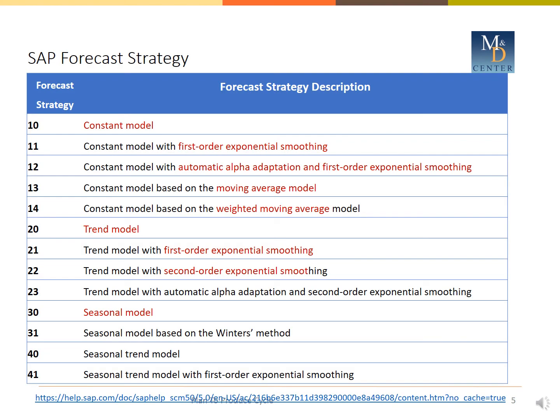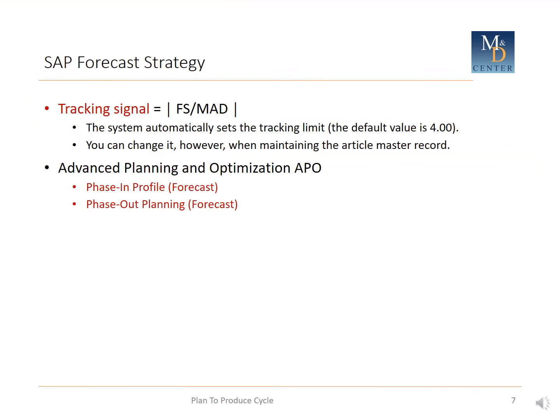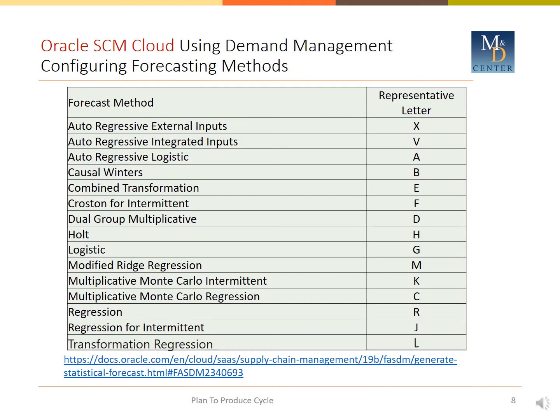In SAP, we find different forecasting strategies: constant model, trend model, seasonal model, trend-seasonal model, and automatic model selection. SAP also provides tracking signal and APO phase-out and phase-in forecasting.